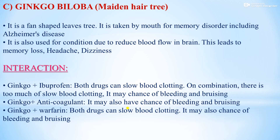The third drug is Ginkgo biloba, also called the maidenhair tree. It is a fan-shaped leaves tree taken by mouth for memory disorders including Alzheimer's disease. It is also used for conditions due to reduced blood flow in the brain, leading to memory loss, headache, and dizziness. Ginkgo biloba interacts with ibuprofen — when taken together, both drugs can slow blood clotting, increasing the chance of bleeding and bruising.